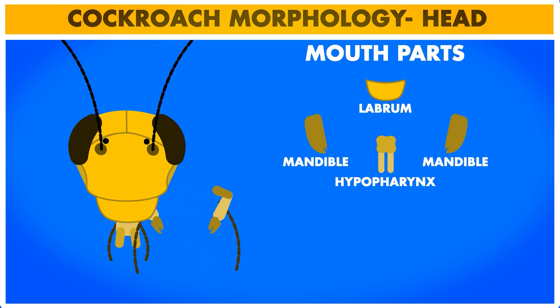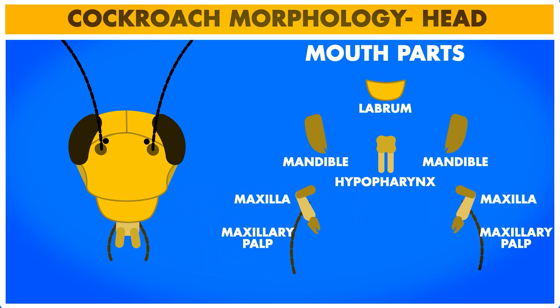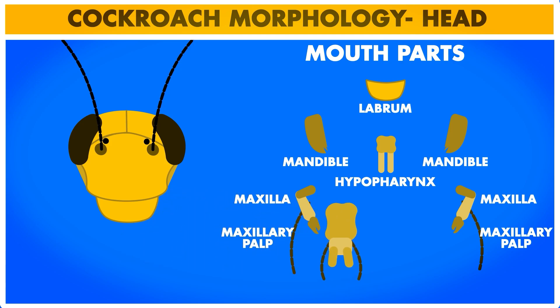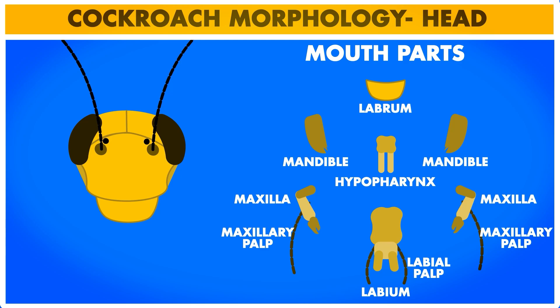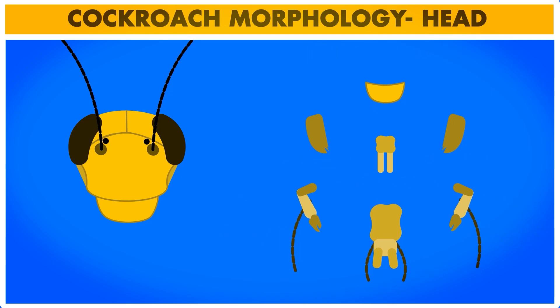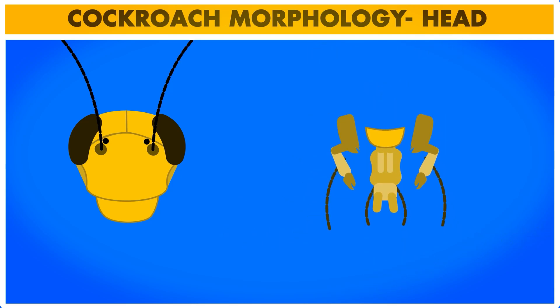A pair of maxillae is present beneath the mandible for mastication of food and also helps in cleaning of antennae. The maxillae also consist of a maxillary palp with olfactory receptors. The last part is the labium, also called the lower lip. A pair of labial palps arises from the labium, which consists of sensory bristles attached to it.